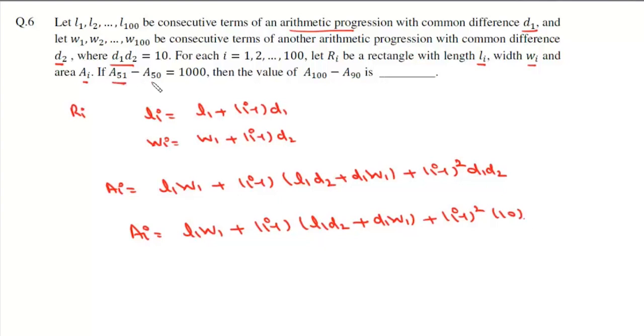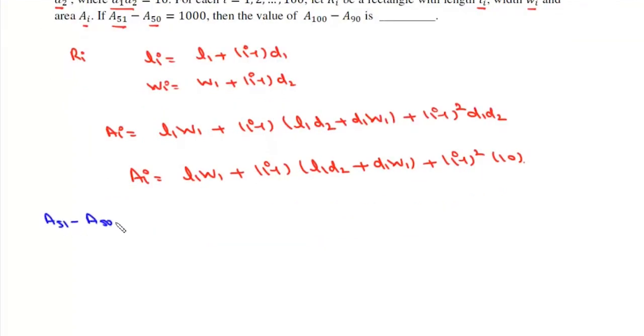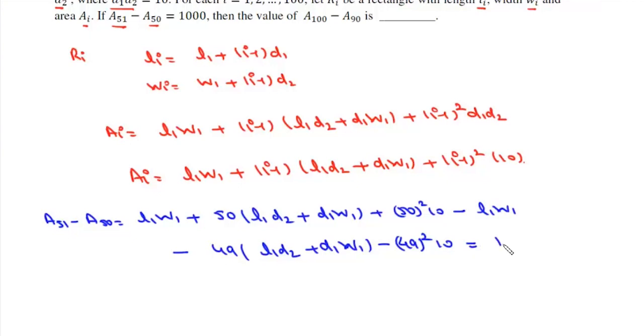Now first we are given that A51 minus A50 is 1000. For A51 we will put i=51 so it will be L1W1 plus 50 times L1D2 plus D1W1 plus 50 square into 10, and then minus A50 which is L1W1 plus 49 times L1D2 plus D1W1 plus 49 square into 10.